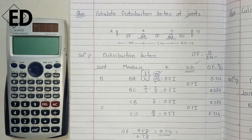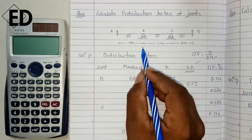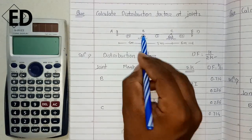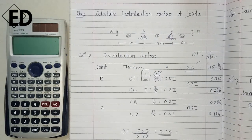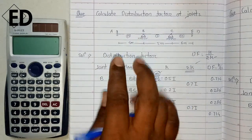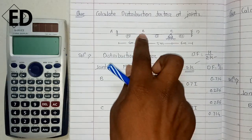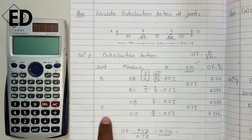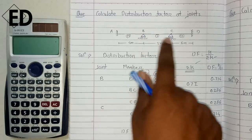There are two joints: joint B and joint C. A joint is the point where two beams or columns meet. Beam AB and beam BC meet at joint B, so that is a joint. The second joint is C, and the members meeting at joint B are BA and BC.